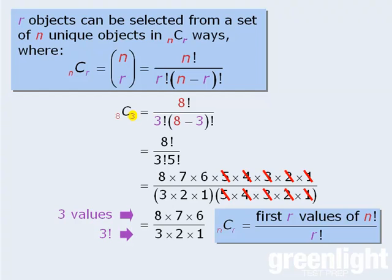Now let's continue with our calculations. We can further simplify this expression by recognizing that we can cancel the 6 in the numerator with the product 3 times 2 times 1 in the denominator. When we do this, we get 8 times 7, which equals 56. So 8 choose 3 is equal to 56.